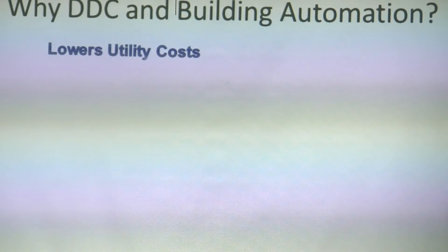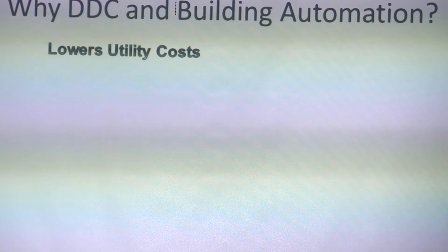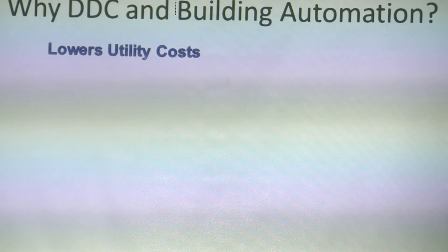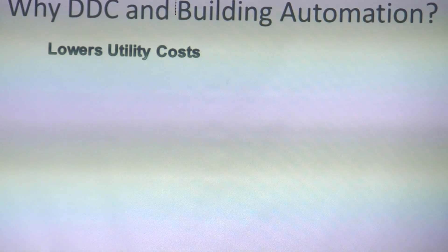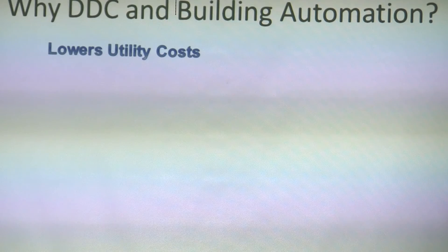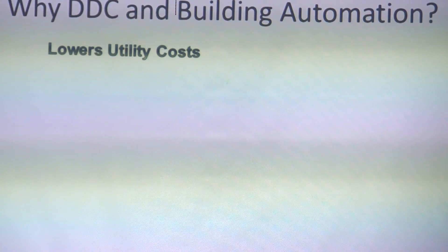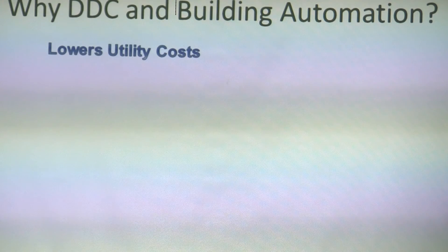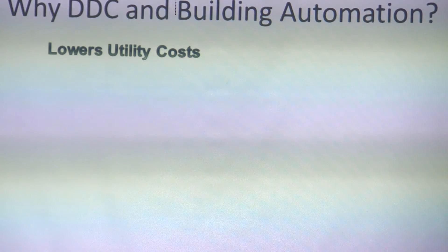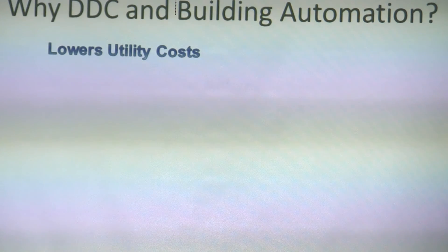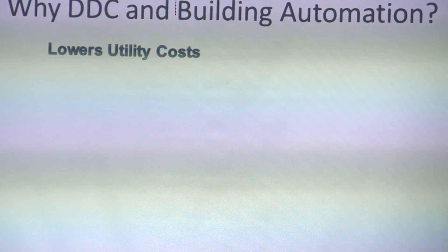So why DDC and building automation? It lowers utility costs. We can go in and optimize your building with special runtime on certain units, less outside air being brought in — the whole goal is to automate the entire process, make it more convenient, and lower your energy cost. Increased productivity is another benefit. People kind of roll their eyes at that, but think about it.